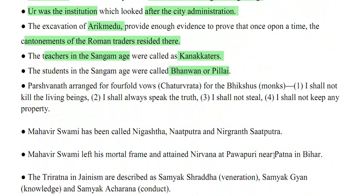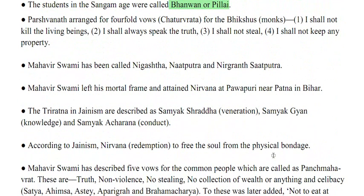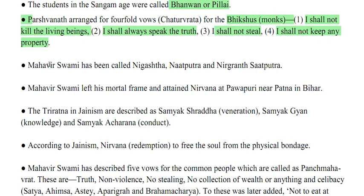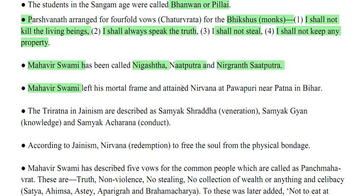Pashanath arranged fourfold vows (Chaturvrat) for monks: I shall not kill living beings; I shall always speak the truth; I shall not steal; I shall not keep any property. Mahavir Swami has been called Nigas Natputra and Nirgranda Satputra. He attained nirvana at Pavapuri near Patna in Bihar. The three ratnis in Jainism are Samyak Shradha (veneration), Samyak Jnan (knowledge) and Samyak Acharana (conduct).